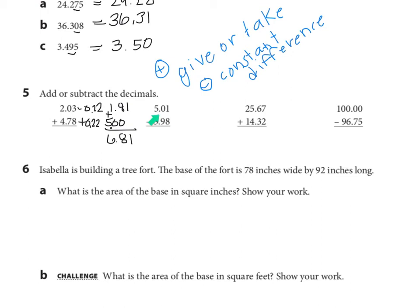Looking at the next problem, we see subtraction — so we're going to use the constant difference. I'm thinking: what can I add to both numbers to make this problem easier to solve? It's easiest when the subtrahend ends in zeros. How can I make three and ninety-eight-hundredths a whole number? I'm going to add two-hundredths — that becomes four wholes. Then I add two-hundredths up here too. Constant difference: it's just moving both numbers on the number line by the same distance — two-hundredths. So this becomes five and three-hundredths. Now I can easily subtract, and the answer is one and three-hundredths.